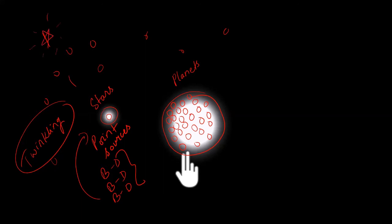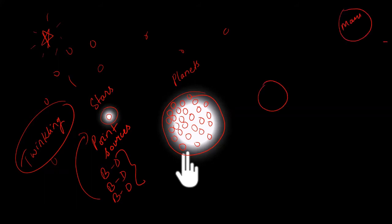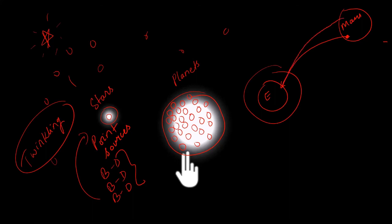On the contrary, planets do not twinkle. For example, take Mars — light rays are falling on Mars, and we have our own atmosphere on Earth. When light rays from Mars reach us, they arrive from multiple points. If the light ray reaching from one point is bright, that means the optical density is less and more amount of light is reaching us. At the same time, the light ray coming from another point is dim.